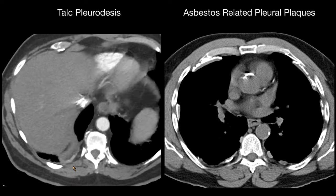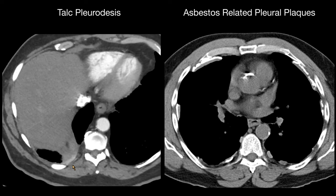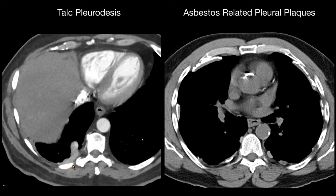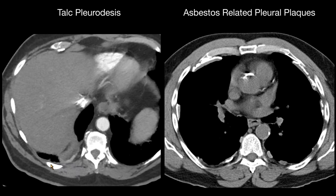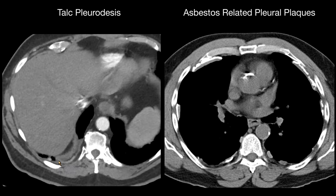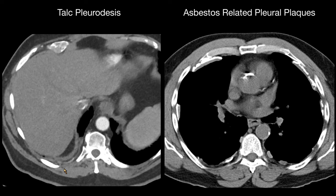And then in talc pleurodesis, oftentimes you do find plaques all the way down into the costophrenic sulci, and this area is usually spared with asbestos-related pleural plaques.